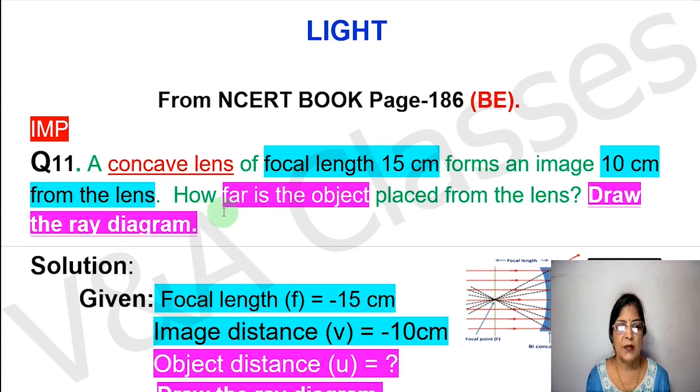The question is that a concave lens of focal length 15 centimeter forms an image which is 10 centimeter from the lens. So how far is the object placed from the lens and also draw the ray diagram.